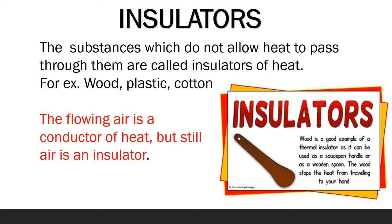On the other hand, handles of cooking utensils are made up of wood, plastic, etc., so that we can hold them easily, as they prevent heat from transferring from the utensils to our hand. These substances are insulators of heat. Insulators are the substances which do not allow heat to pass through them. For example, wood, plastic, cotton, etc.